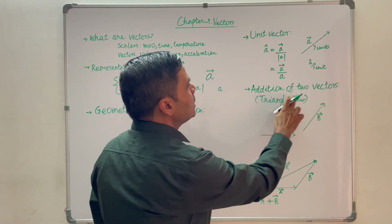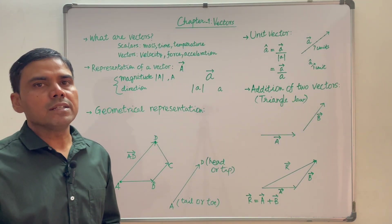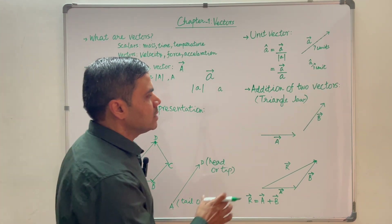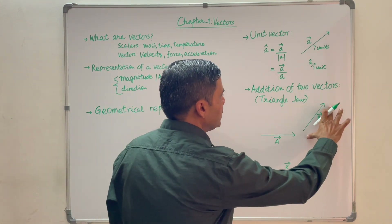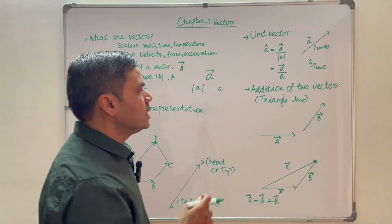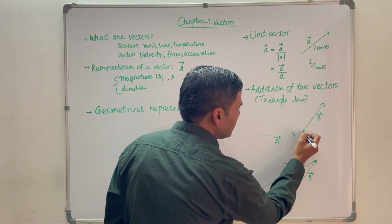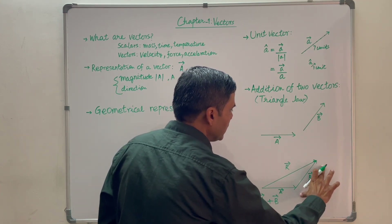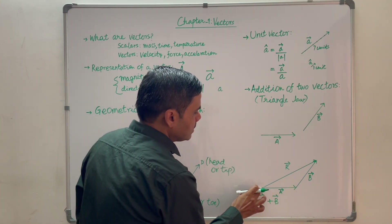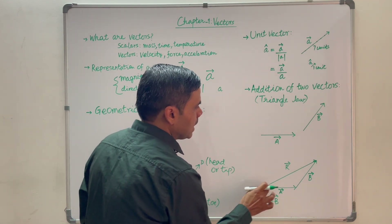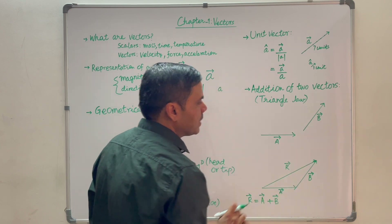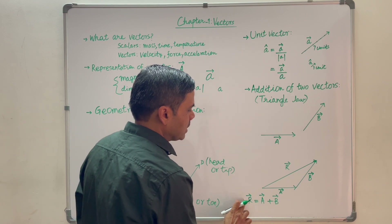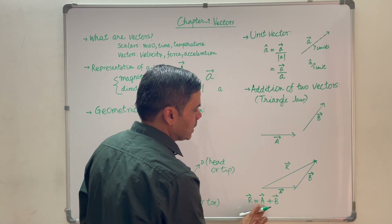Now let us talk about the addition of two vectors. Addition of two vectors follows the triangle law of addition. As per the triangle law of vector addition, two vectors A and B are to be added such that the tip of the first vector and the tail of the second vector must coincide. The resultant of addition of vector A and vector B will have its tail coinciding with the tail of the first vector and its head coinciding with the head of the second vector. So vector R will be equal to vector A plus vector B.